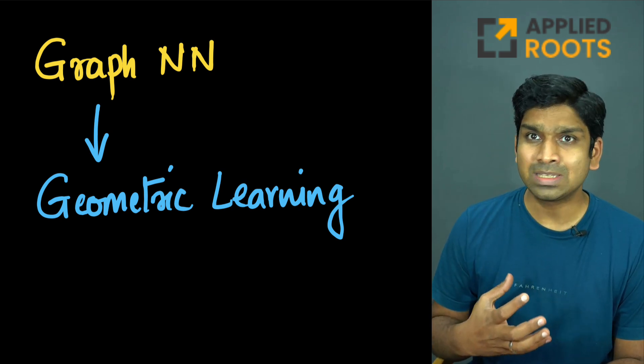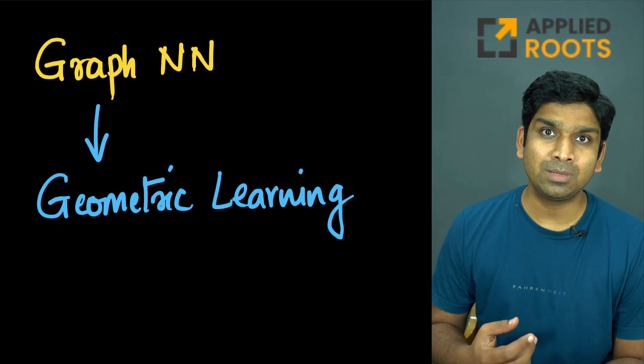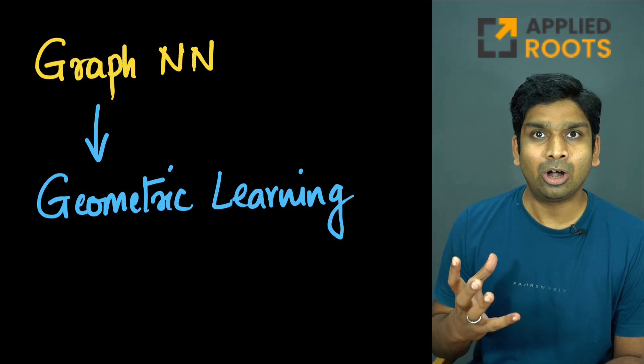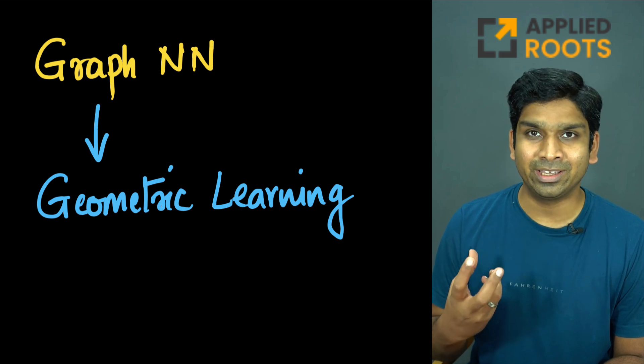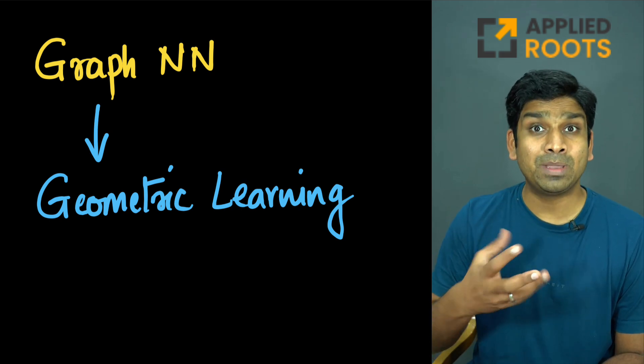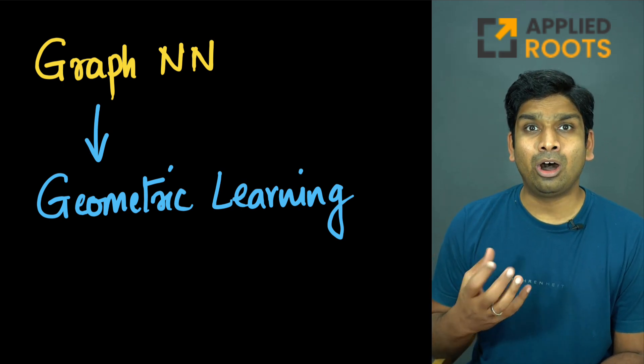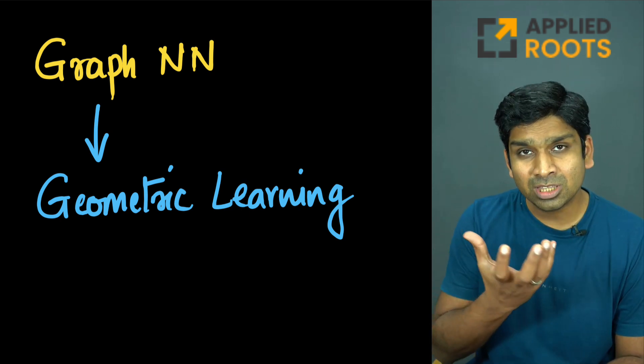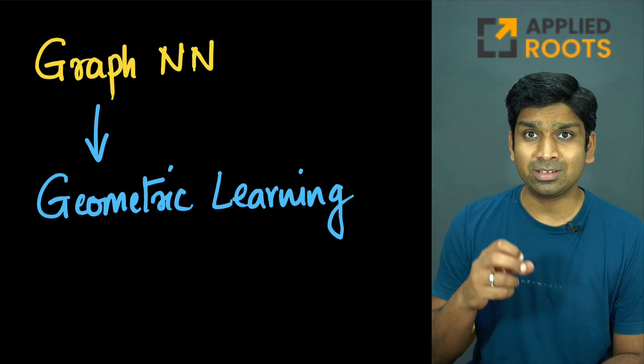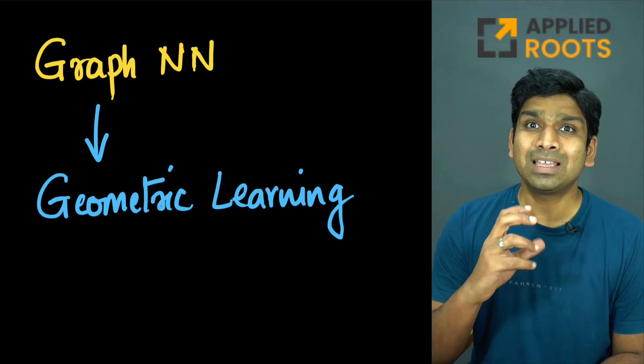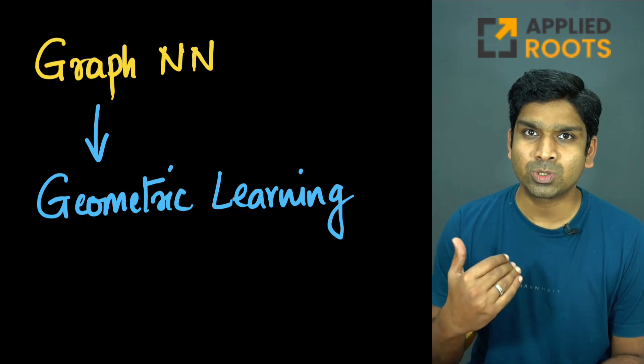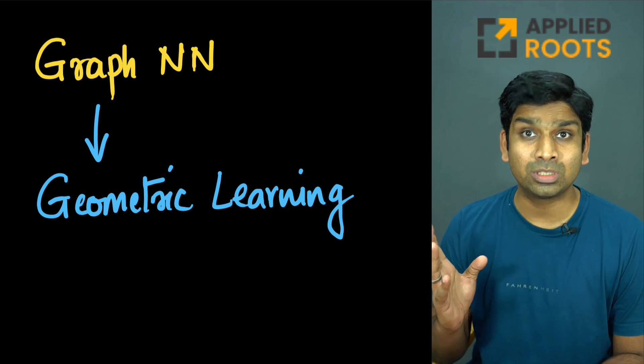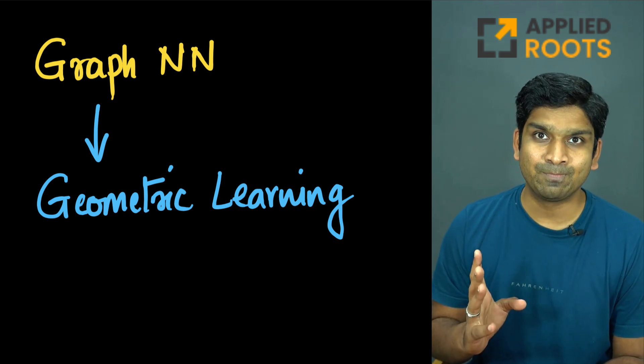Now graph neural networks is a slightly recent concept in machine learning, especially in deep learning. This comes under the broader umbrella of something called geometric learning, where you're basically performing deep learning on structures like graphs, geodesics, groups, etc. Within the broader area of geometric learning, graph neural networks is the one that has most applications today. I'm sure this is a very interesting area which will see a lot of growth in the next five years with tons of applications.